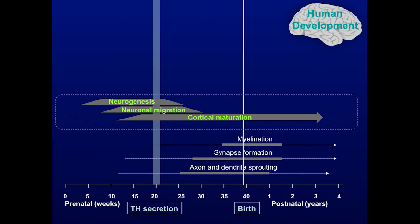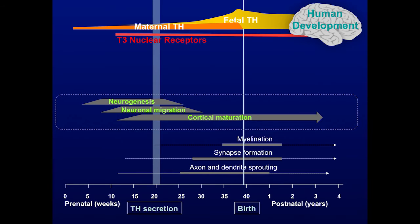But then there is a period of neuronal migration and then cortical maturation, myelination, synapse formation, synaptogenesis, and axon and dendrite sprouting that are dependent on thyroid hormones. Here is the relation between these processes with the secretion of thyroid hormone from the fetus and the presence of thyroid hormone receptors.